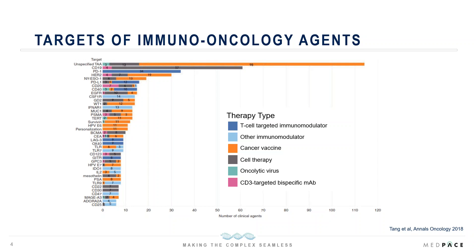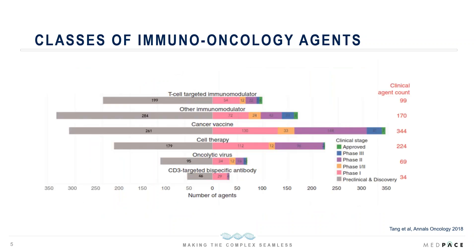A recent analysis identified 940 clinical-stage agents targeting more than 270 different targets. The most common target is an unspecified tumor-associated antigen, typically represented by vaccines, autologous tumor cell lines, autologous dendritic cells, or tumor-infiltrating lymphocytes. Other commonly identified agents target CD19 or PD-1. The vast majority of immuno-oncology agents are cancer vaccines or immunomodulators targeting T-cells. T-cell targeted immunomodulators include immune checkpoint inhibitors, and newer agents such as oncolytic viruses and bispecific antibodies are also in development.